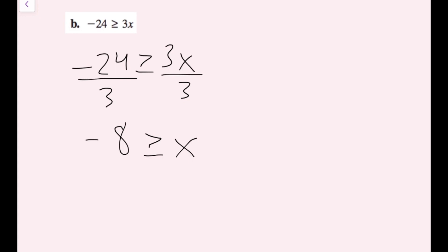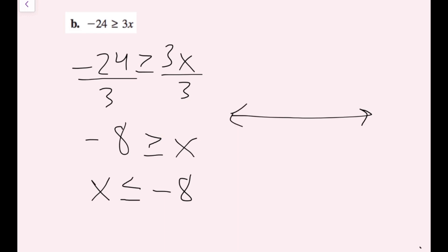Now I have the inequality: negative 8 is greater than or equal to x. But when I graph this, I want to have my x term to the left. So I'm going to rewrite this as x is less than or equal to negative 8, because that's the same inequality. All the values we want need to be smaller than negative 8. I'll draw my number line with negative 8, negative 7, and negative 9. Since it's less than or equal to, I'm going to have a closed circle and the arrow goes to the left.